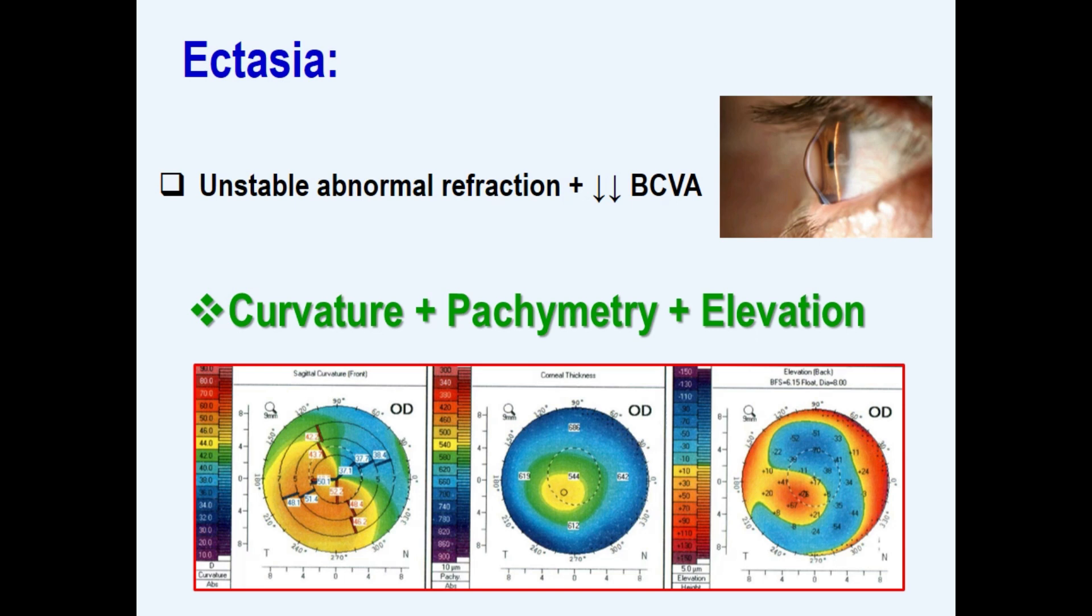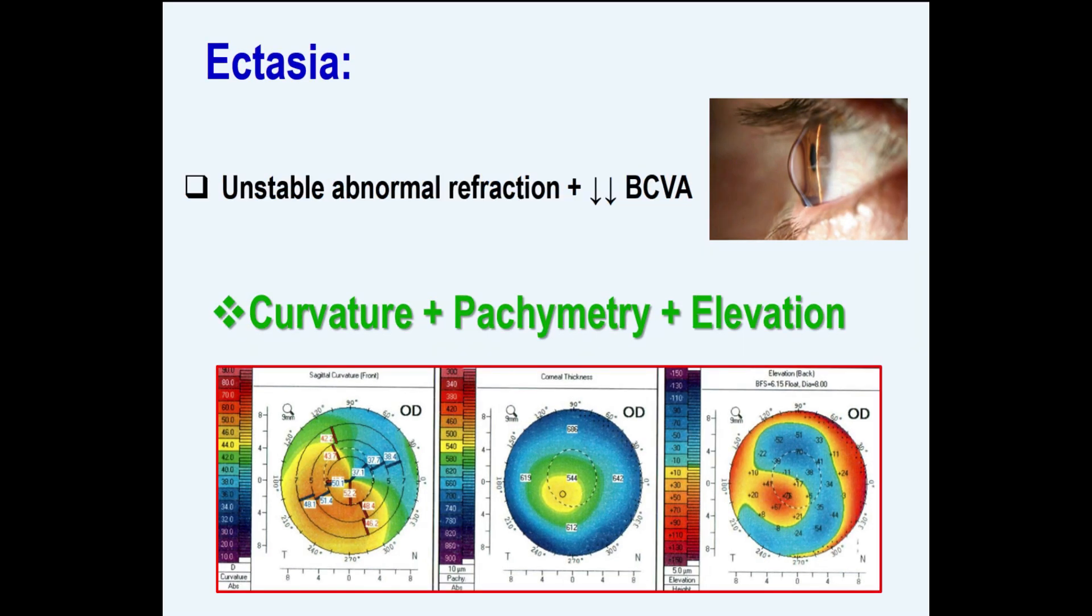Elevation maps are considered the cornerstone in detection of corneal ectasia. Anyhow, in well-established ectasia such as keratoconus, the three maps—the curvature, the pachymetry, and the elevation—are abnormal. The three zones—the steep curvature, the thin pachymetry, and the abnormal back elevation—are corresponding. This is called three-point touch.